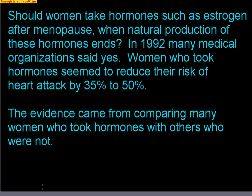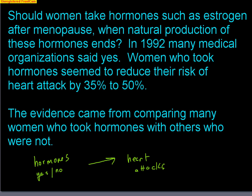The explanatory variable in this case would be the presence of hormones — either yes, they were taking hormones, or no, they were not. The response variable would be heart attacks — how many heart attacks they had. After this study, we might find a strong association, a strong relationship between taking hormones and having reduced heart attacks. But we cannot say taking hormones will stop or prevent heart attacks. We cannot show that cause and effect relationship.